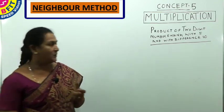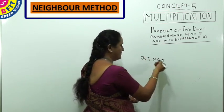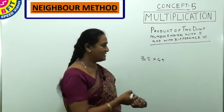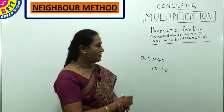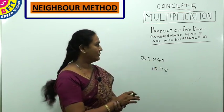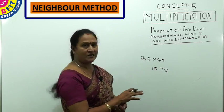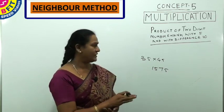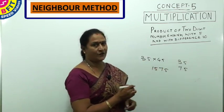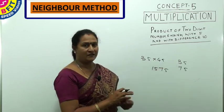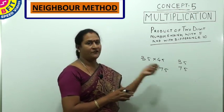We saw how to multiply numbers ending with 5 where the difference is 10. For example, 35 and 45: difference is 10, last two digits are 75, higher digit is 4, 4² = 16, minus 1 = 15. So the answer is 1575. You can apply this for other multiples of 10 as the difference, but general multiplication may be easier for those. Now we look at the case where numbers end with 5 but the difference is not 10.